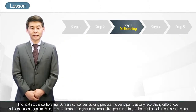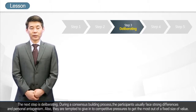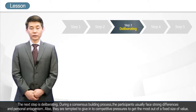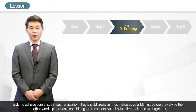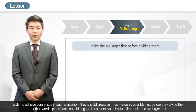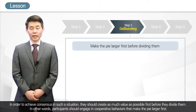The next step is deliberating. During a consensus-building process, participants usually face strong differences and personal antagonism, and they are tempted to give in to competitive pressures to get the most out of a fixed size or value. In order to achieve consensus in such a situation, they should create as much value as possible first before they divide it. In other words, participants should engage in cooperative behaviors that make the pie larger first.